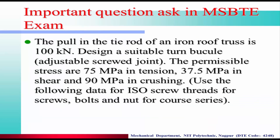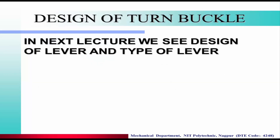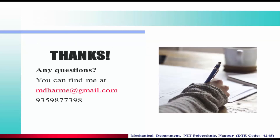An important question asked in the MSBTE exam: the pull in the tie rod of an iron rope truss is 100 kN — design a suitable turnbuckle adjustable screw joint with permissible stresses of 75 MPa in tension, 37.5 MPa in shear, and 90 MPa in crushing. The load value is different but the procedure is the same as solved today — solve this as an assignment. In the next lecture, we will cover the design of levers and types of levers. For any queries, contact me at 9359877398.